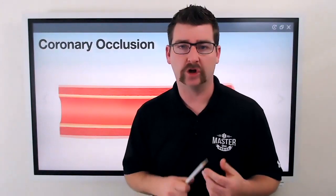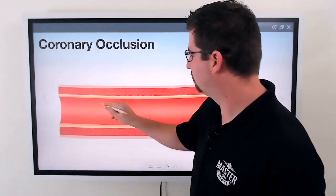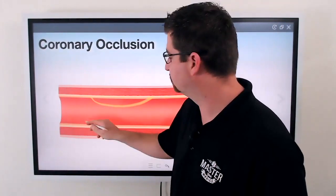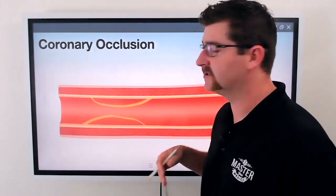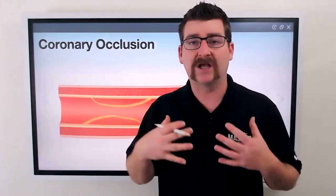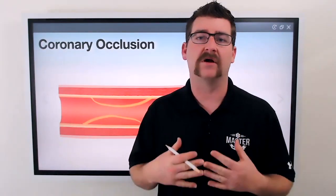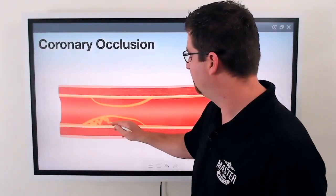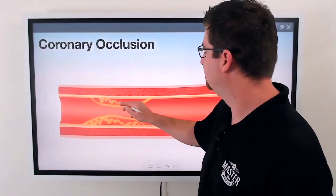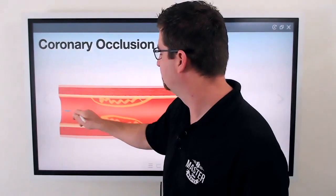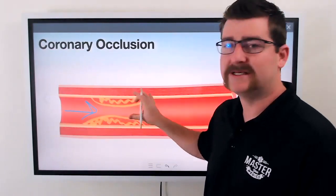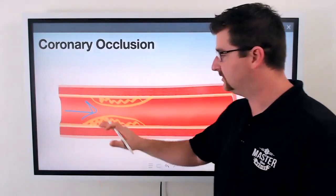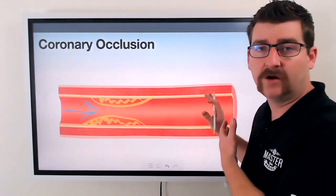Let's talk about what a coronary occlusion is. The coronary arteries are, of course, in your heart. They distribute blood, nutrients, oxygen, et cetera, down to the actual tissues — the physical muscle of the heart. What can end up happening is you get plaque buildup, and that plaque builds up and narrows basically the diameter of where that blood flow could actually get through to those tissues in the heart.